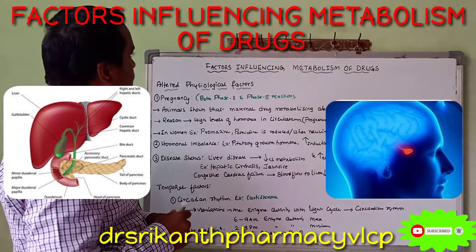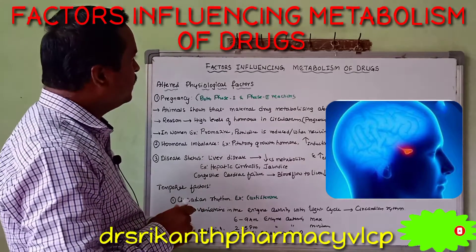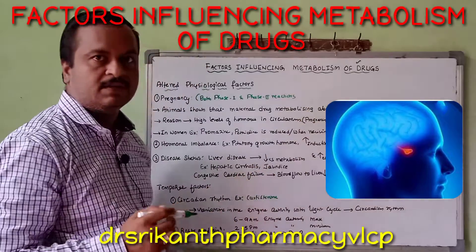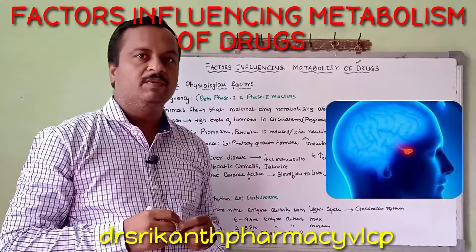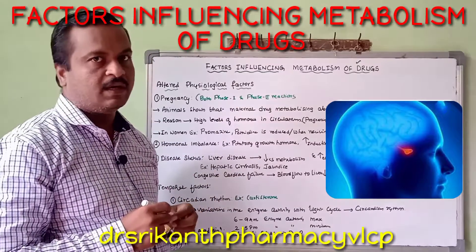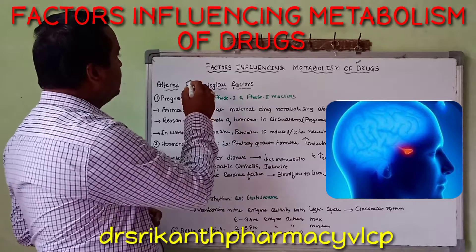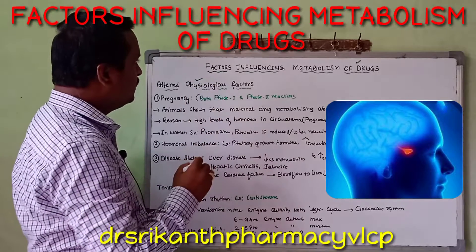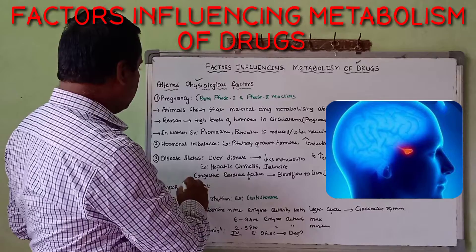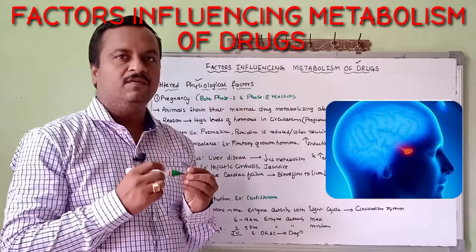Today I came with the continuation part of the last video, that is factors influencing metabolism of a drug. In the earlier video, I discussed the physico-chemical properties of the drug, chemical factor, and biological factor. So in this part 3, we are discussing the other factors like the altered physiological factor as well as the temporal factor. These two factors are also very much important in the rate of metabolism.